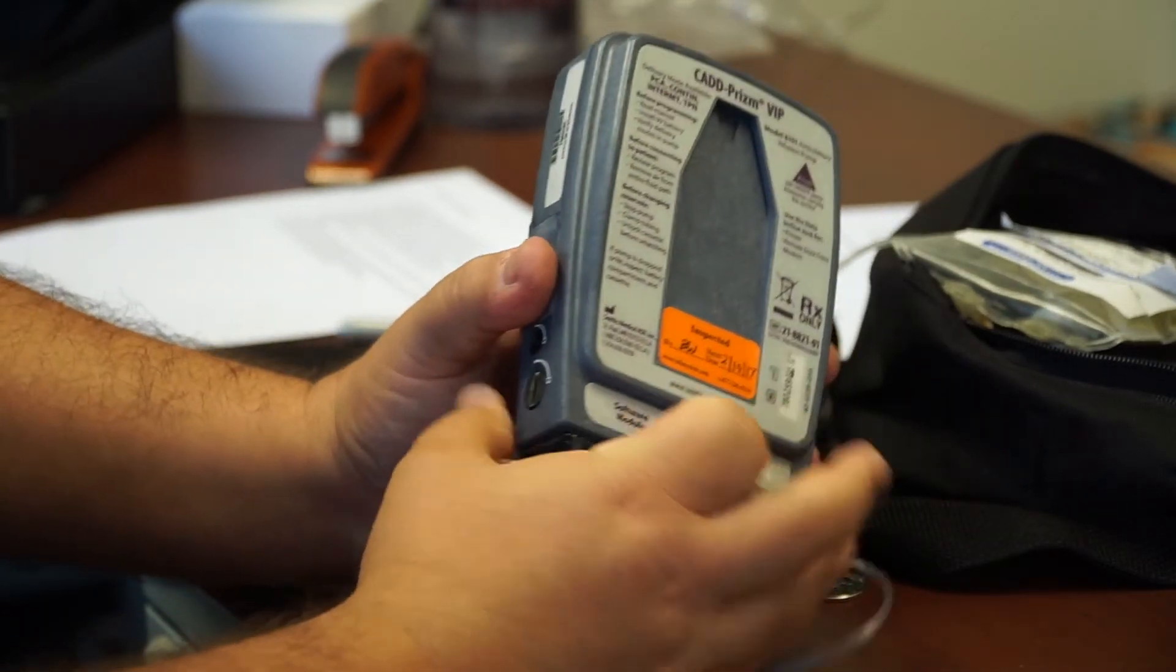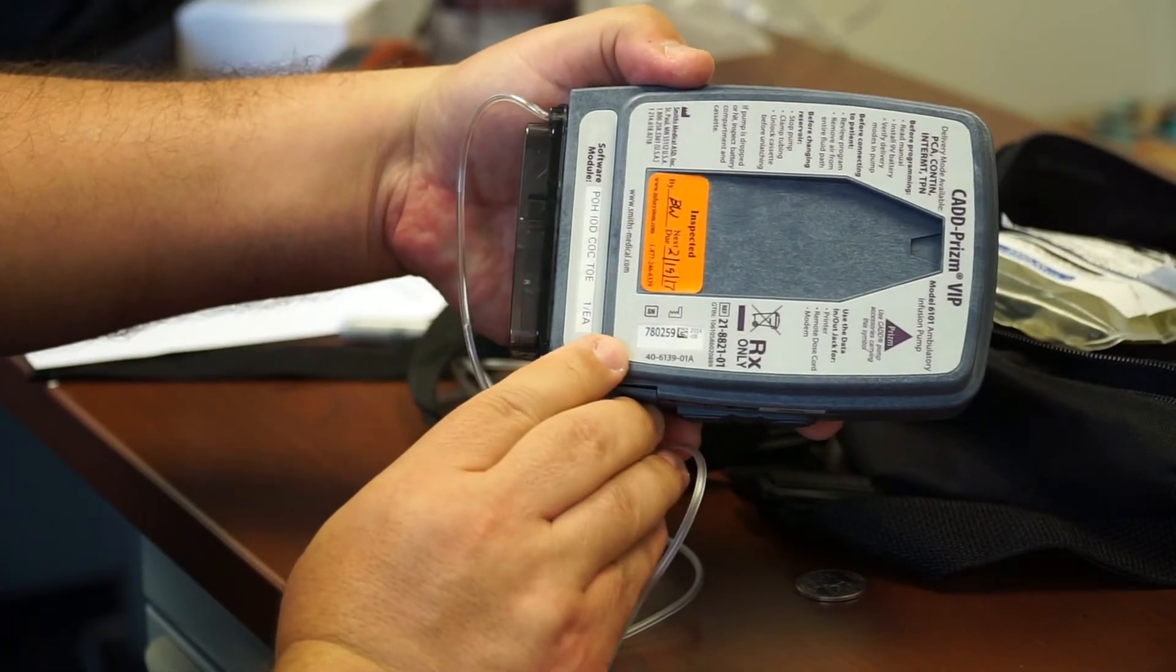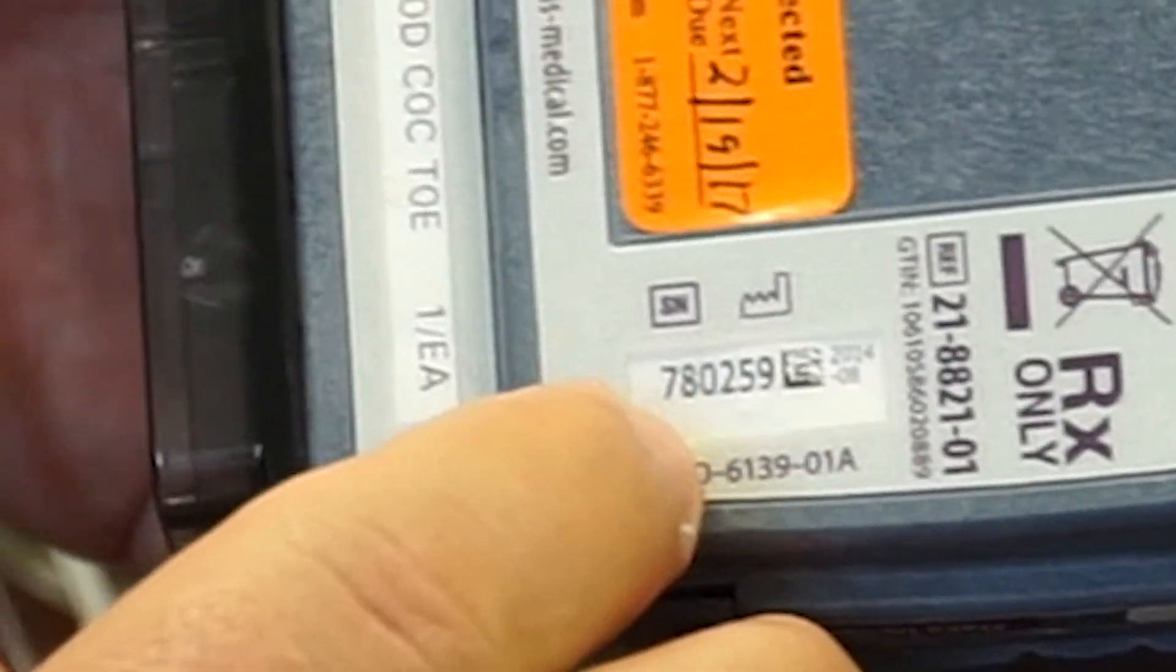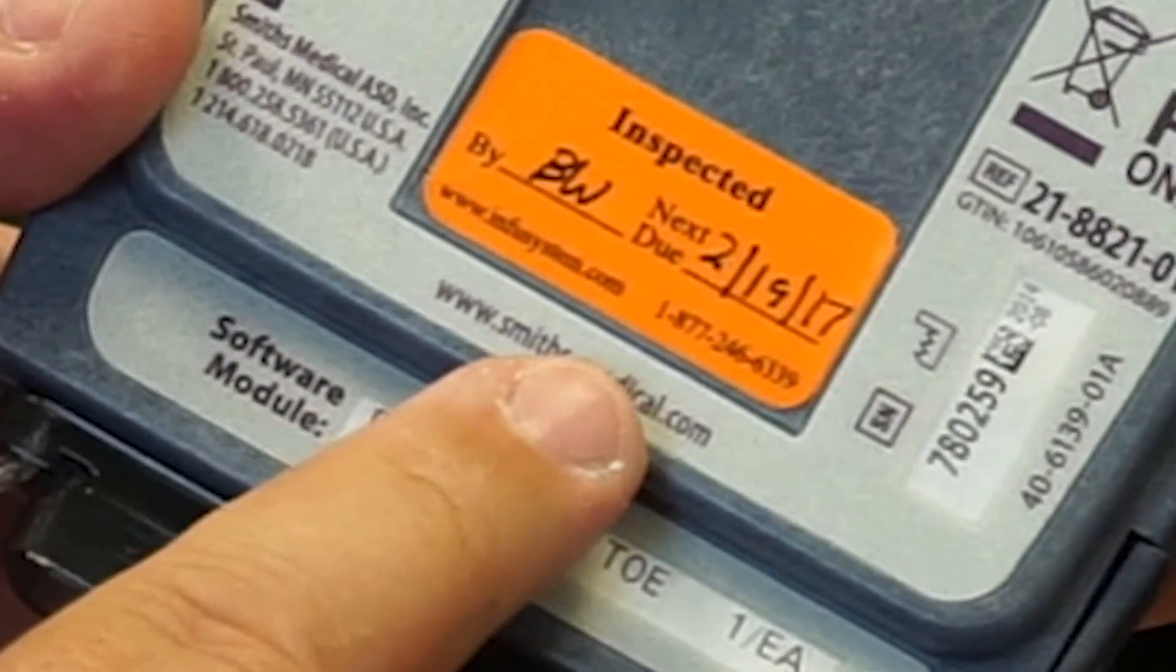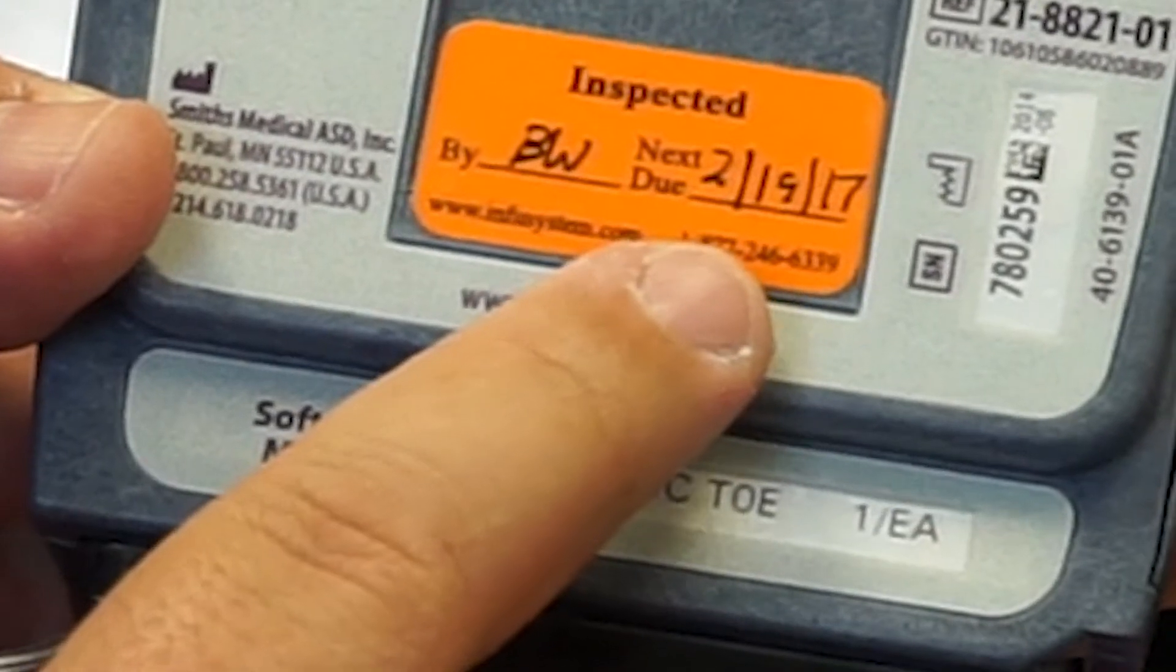The serial number is typically on the back. And you can see this number here. This particular one is 780259. And it will also have a calibration date. So, there will be an orange or yellow sticker on there with a date that says next due date is by a certain time.